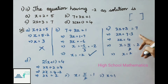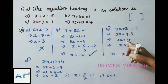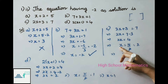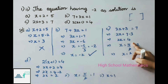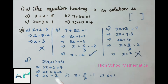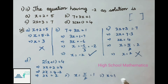Let us verify the remaining two equations. Third equation: 2x + 3 = 7. Transposing +3: 2x = 7 - 3 = 4. Dividing by 2: x = 4 ÷ 2 = 2, which is not the solution. Fourth equation: 2(x + 1) = 4. Expanding: 2x + 2 = 4. Transposing +2: 2x = 4 - 2 = 2. Dividing by 2: x = 1, also not a solution. Therefore our answer is option B.